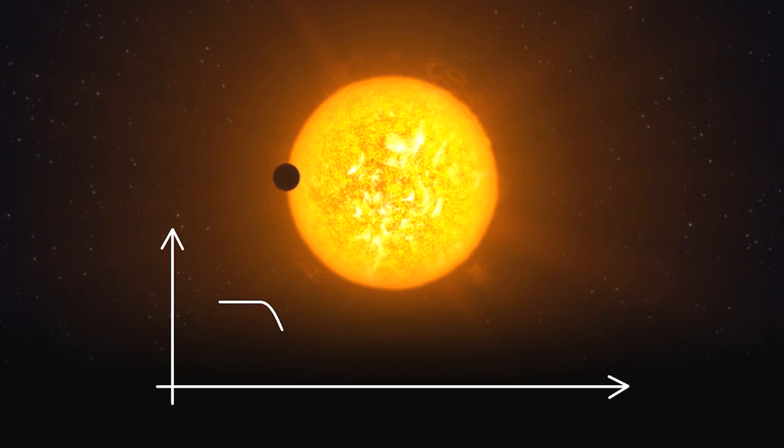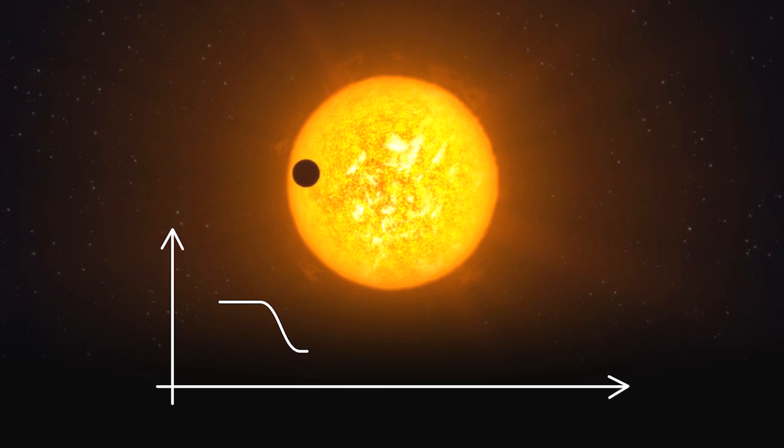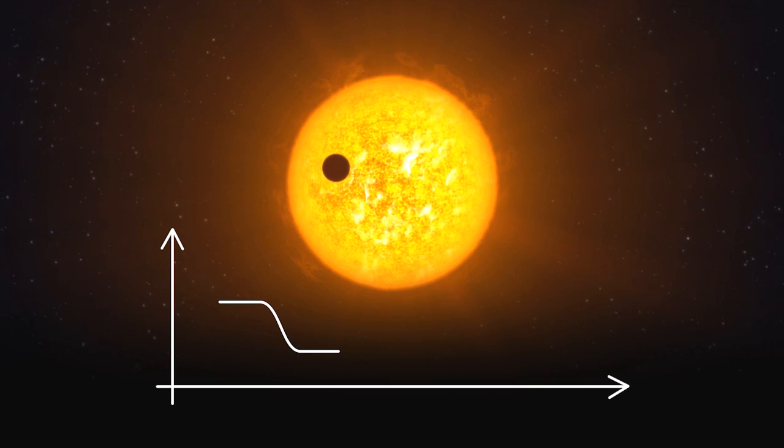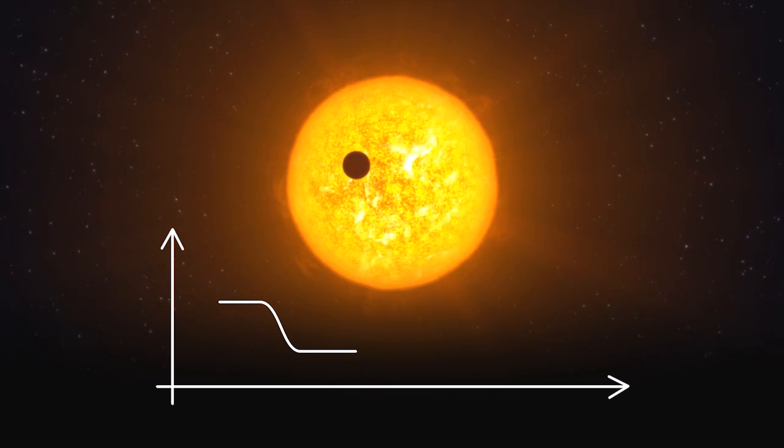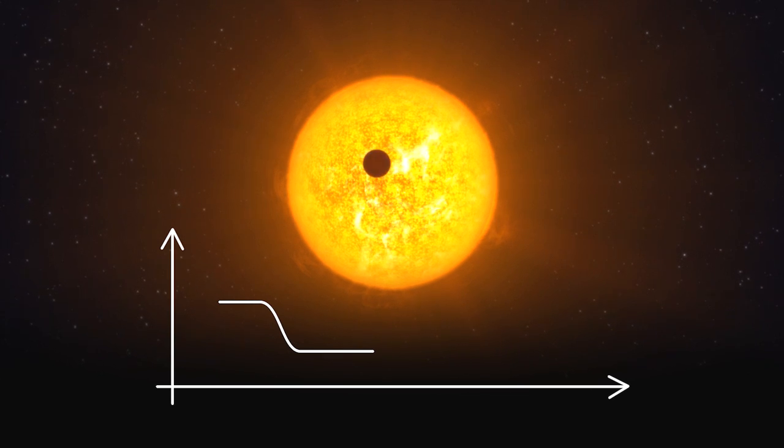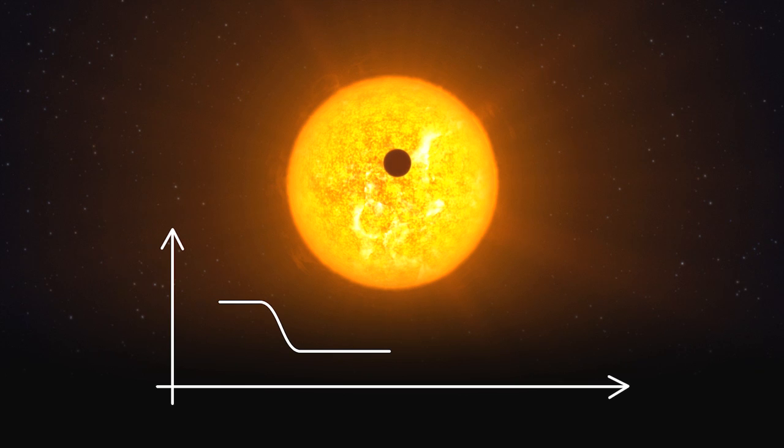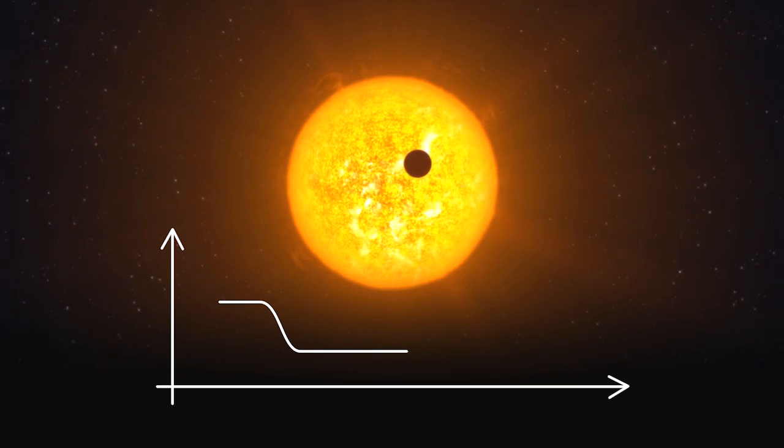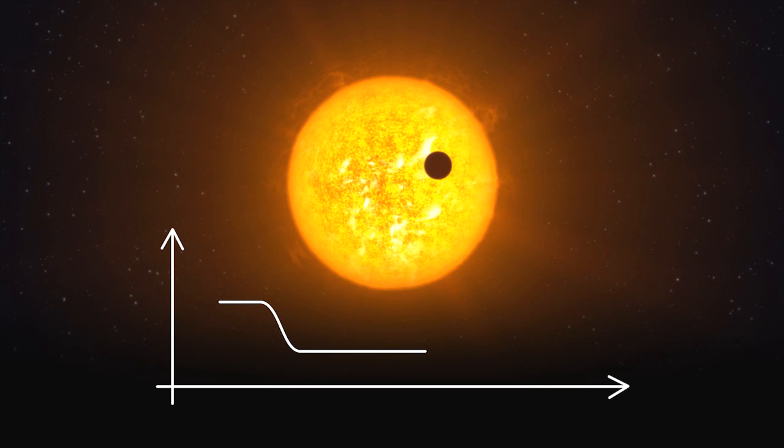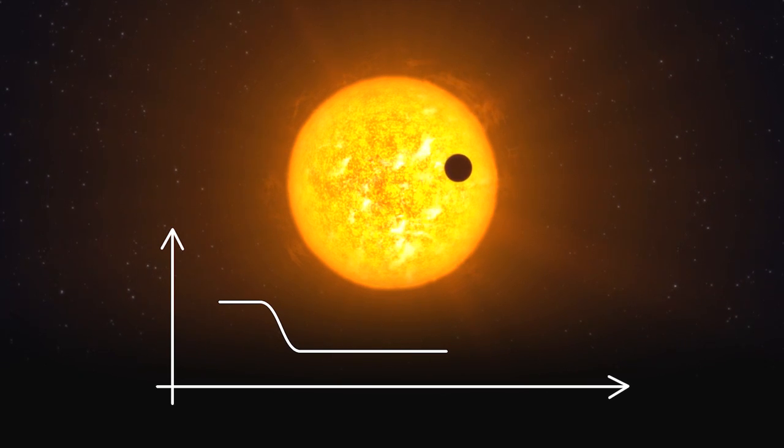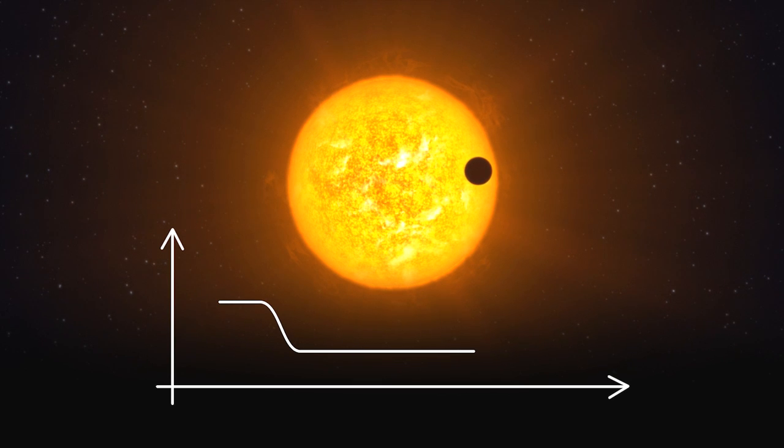Today, many exoplanets are discovered when they transit across their parent stars. If we happen to see the planet's orbit edge-on, it will pass in front of its star every cycle. Thus, tiny, regular brightness dips in the light of a star betray the existence of an orbiting planet.